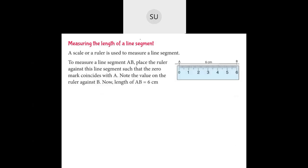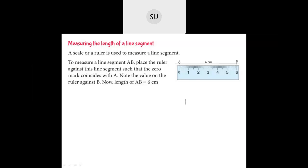Now we will learn how to measure the length of a line segment using a scale or ruler. To measure line segment AB, place the ruler against the line segment such that 0 coincides with point A. Then note the value on the ruler against point B. Here point B is at 6, so the length of line AB is 6 centimetres.